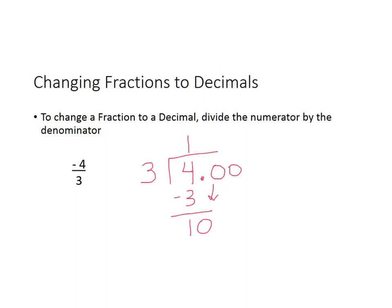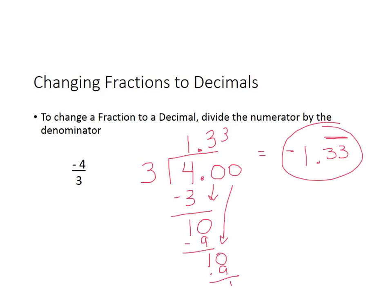Bring that zero straight down. The decimal goes up on the roof. 3 goes into 10 three times, which is 9, subtract, bring down the other zero. 3 goes into 10 three times, 9, subtract, and by now you can see the pattern. So the way we would write that is 1 and 33 hundredths with a repeating bar above it. Now we bring the negative symbol back in, so our final answer is negative 1 and 33 hundredths repeating.